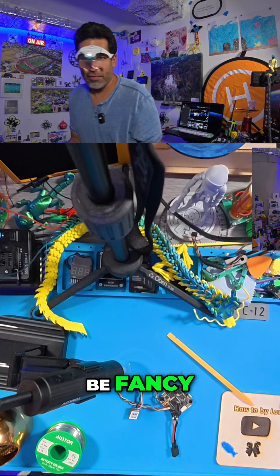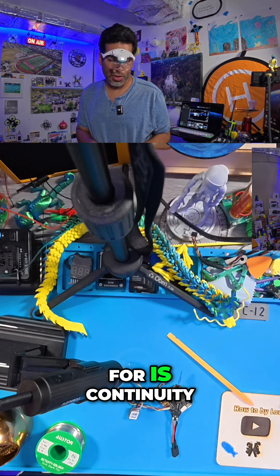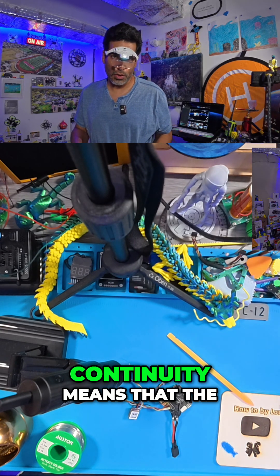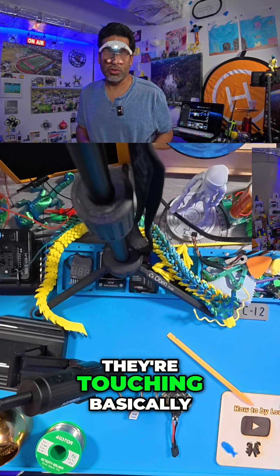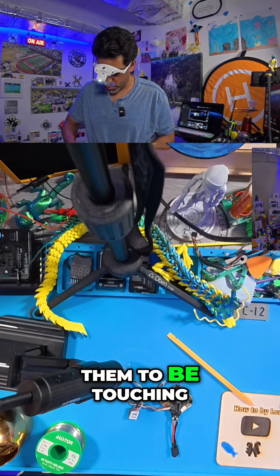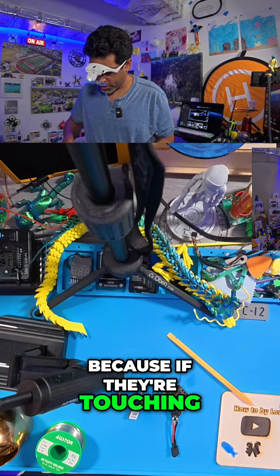It doesn't have to be fancy because all we're testing for is continuity. Continuity means that the connections are bridged - they're touching basically. And you don't want them to be touching because if they're touching,